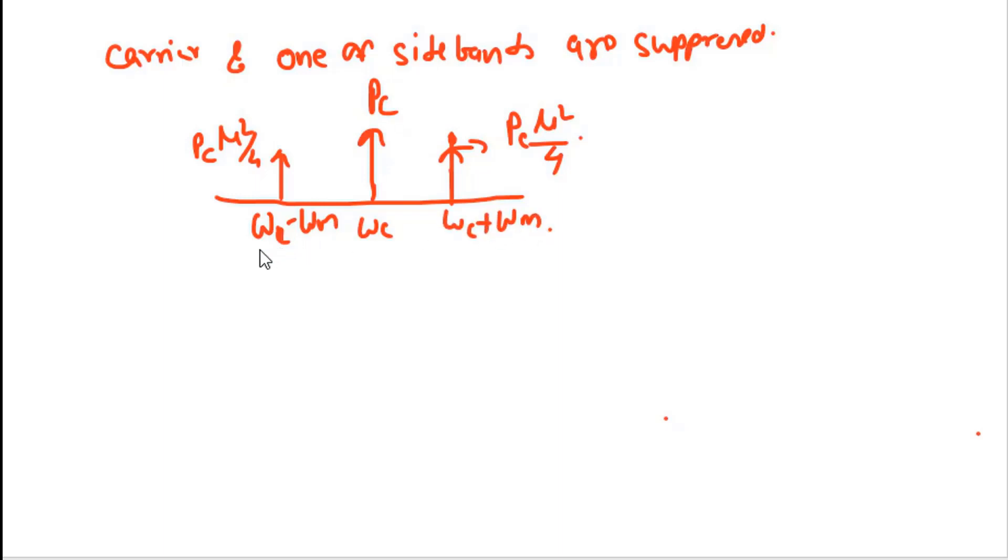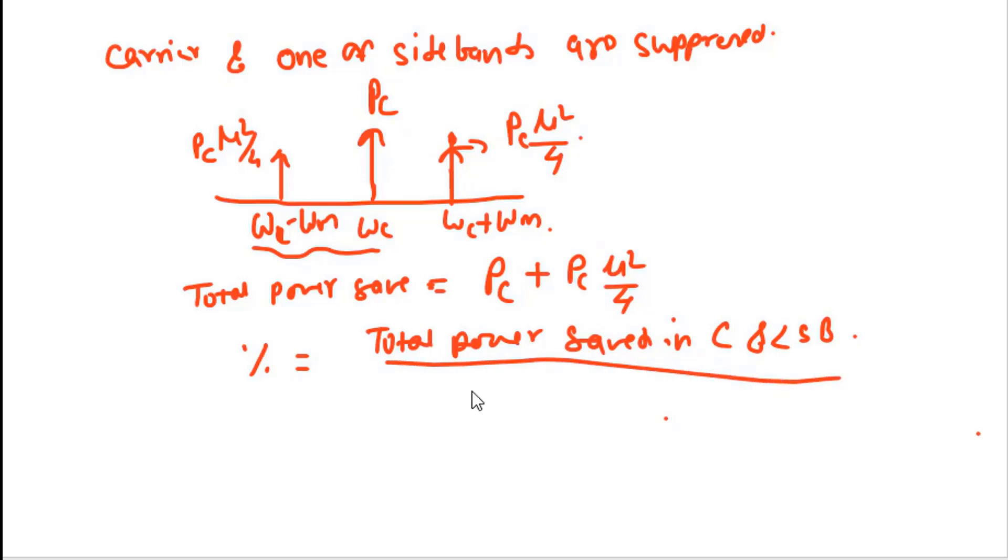If we suppress the carrier and one sideband, the total power saved will be Pc + Pc μ²/4. The percentage of power saved is given by: total power saved in carrier and LSB divided by total transmitted power.